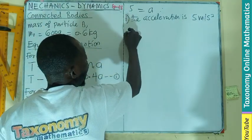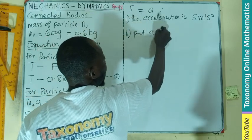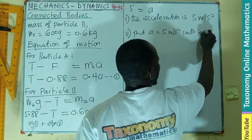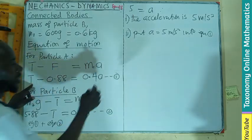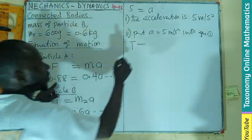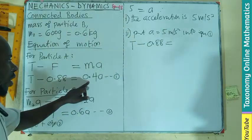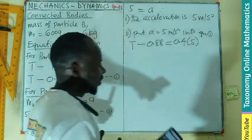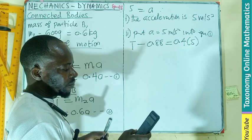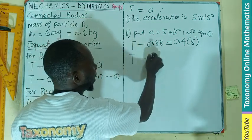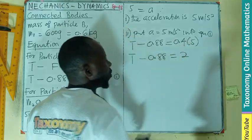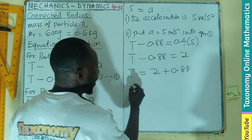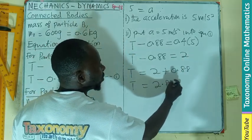Now that we know the acceleration, we need to find the tension also. Put a equals to 5 into equation 1. Meaning T minus 0.88 equals 0.4 times 5. If we multiply 0.4 by 5, that will give you 2. So T minus 0.88 equals 2. 2 plus 0.88 makes T to be 2.88.